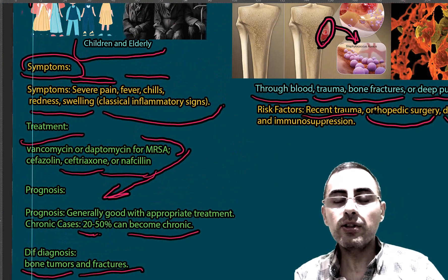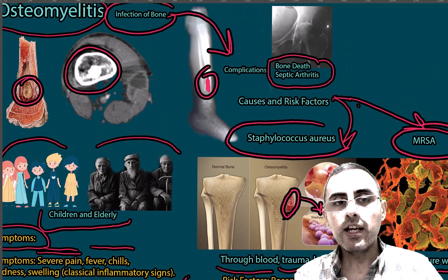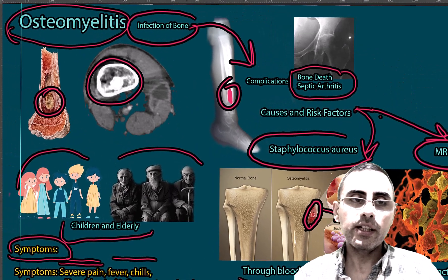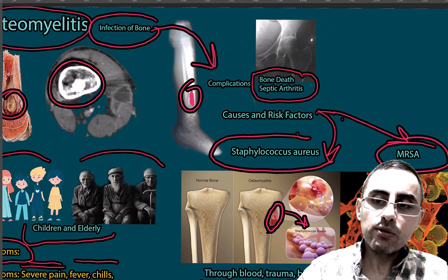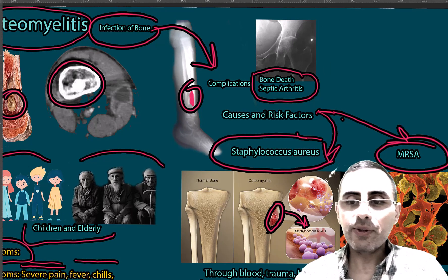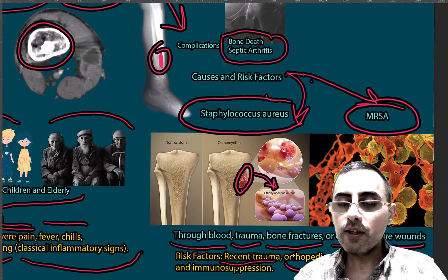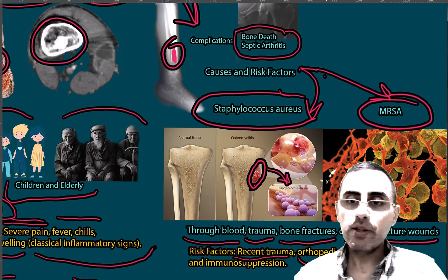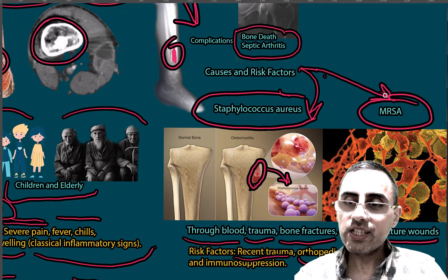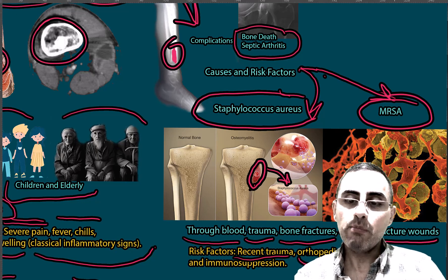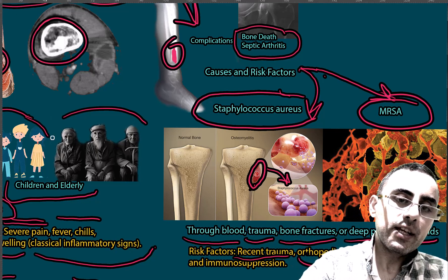To summarize: osteomyelitis is an infection of bone and a severe disease that causes serious symptoms. It is usually caused by Staphylococcus aureus or methicillin-resistant Staphylococcus aureus. Treatment is difficult and challenging because MRSA is resistant to many antibiotics.